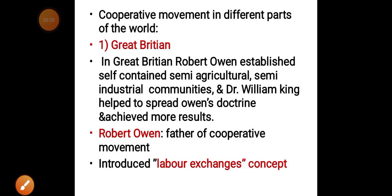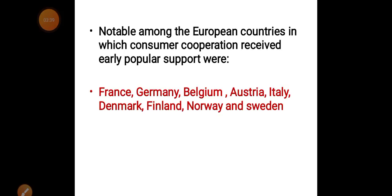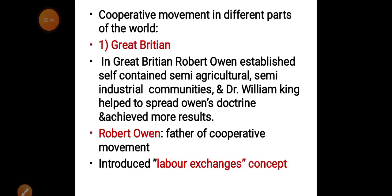Today we will discuss Great Britain and some key personalities: Robert Owen and Dr. William King. In Great Britain, we first studied Scotland and the short porters associations, then Fenwick Weavers, then the Fenwick Consumer Society, and finally we came to the 1844 Rochdale Pioneer Society.